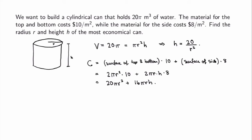However, as written, the cost function depends on two variables, r and h. We don't yet know how to optimize a function of two variables. Fortunately, h and r are not independent — they're related by the fixed volume equation. So I can substitute h equals 20 over r squared into the cost function to get 20 pi r squared plus 16 pi r times 20 over r squared, which simplifies to 20 pi r squared plus 320 pi over r. This is now the cost function as a function of a single variable, r.